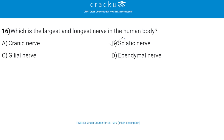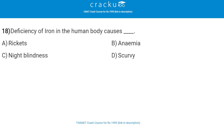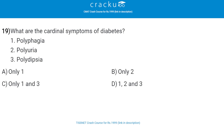The sciatic nerve is the largest and longest nerve in the human body. Next, which of the following is a rich source of vitamin K? The correct answer is green vegetables, that is option A. Next, deficiency of iron in the human body causes? The correct answer is anemia, that is option B. Next, what are the cardinal symptoms of diabetes? The correct answer is option D — polyphagia, polyuria, polydipsia.